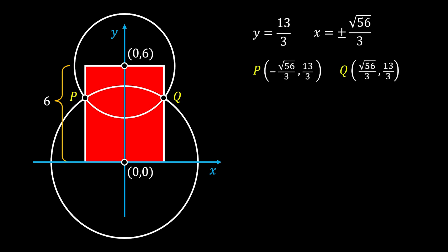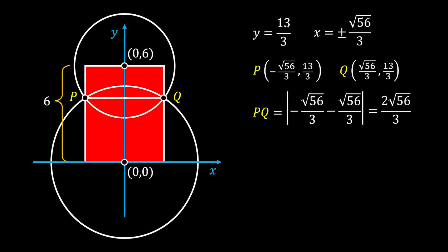In this way we obtained the coordinates for both intersection points P and Q. To find the length of our rectangle we need the value of line PQ. Since the y-coordinate is the same for both points, we simply find the absolute value of the difference between their x-coordinates, giving us PQ = 2√56/3, which neatly approximates to 5. The area of the rectangle is PQ times the height 6. Substituting the value of PQ, we finally get that the area of our red rectangle is approximately 30 square units.